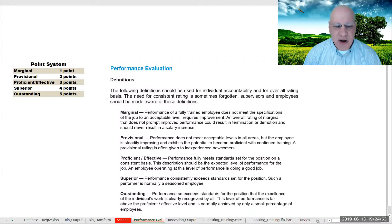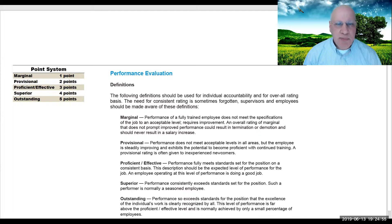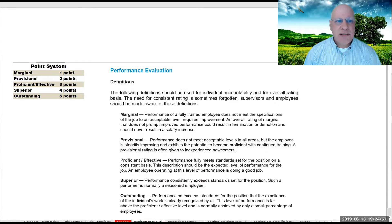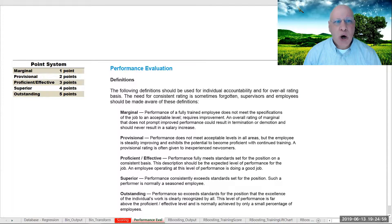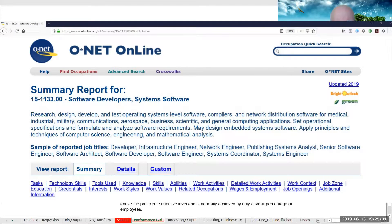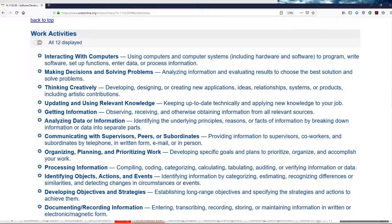Another strategy to find what to rate would be to go to the U.S. Department of Labor's O-Net Online and look up the name of the title. You can see here the synonyms for that role, and then I'd like to go down to the work activities, and here we have 12 of them.